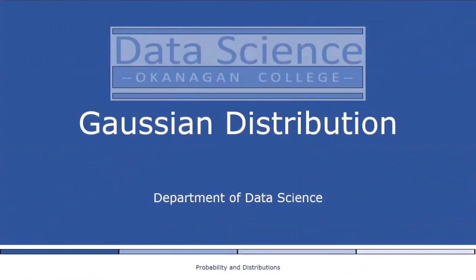The Gaussian distribution is the most well studied probability distribution for continuous valued random variables. It's also referred to as the normal distribution. Its importance originates from the fact that it has many computationally convenient properties, which we'll discuss in the following video.